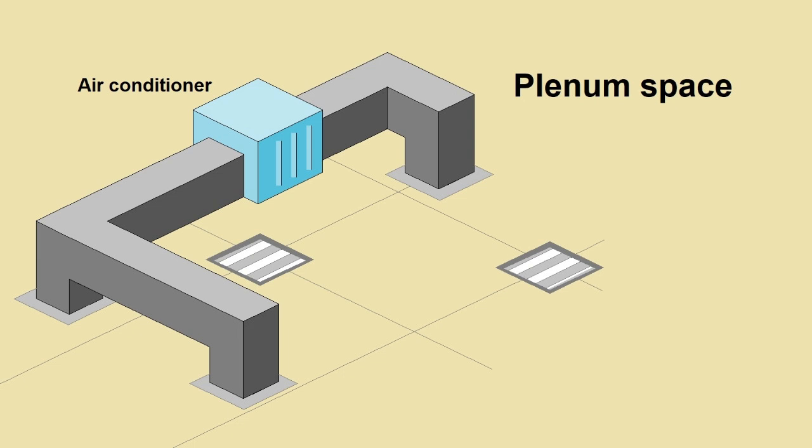We can tell this is a plenum rated space because the ventilation system is not a fully enclosed loop. Because of this, air in the workspaces below the drop ceiling is able to move freely and mix with the air in the plenum space.